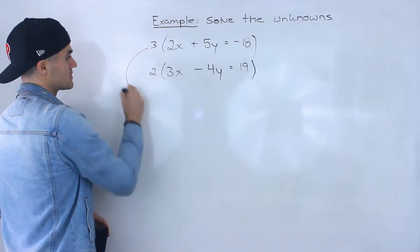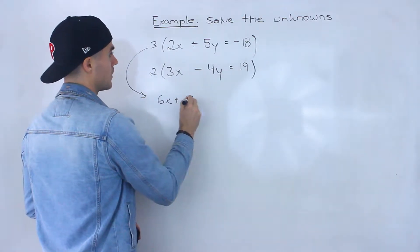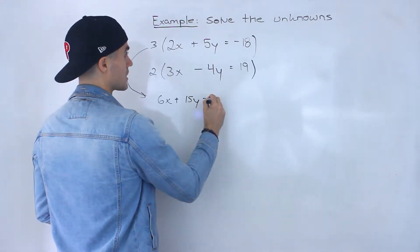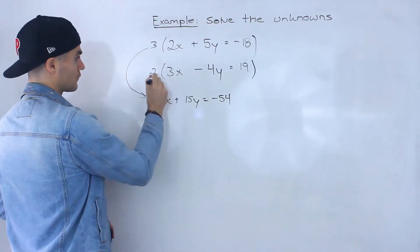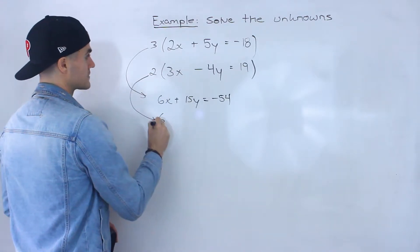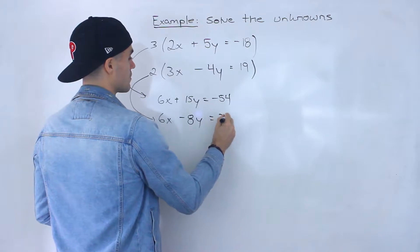So continuing this over here so we'll have 6x plus 15y equals negative 54 and over here from this one we'll have 6x minus 8y equals 38.